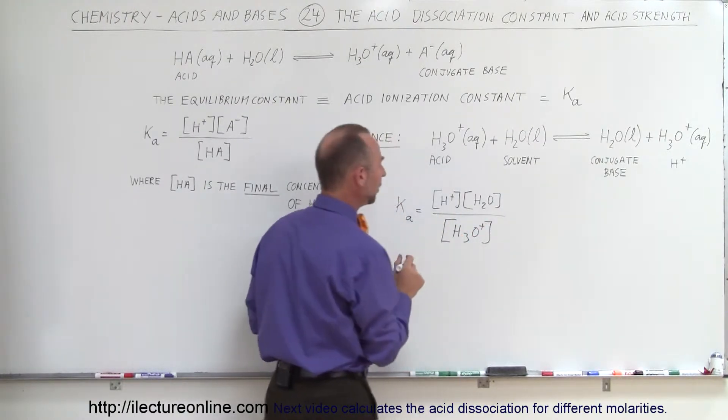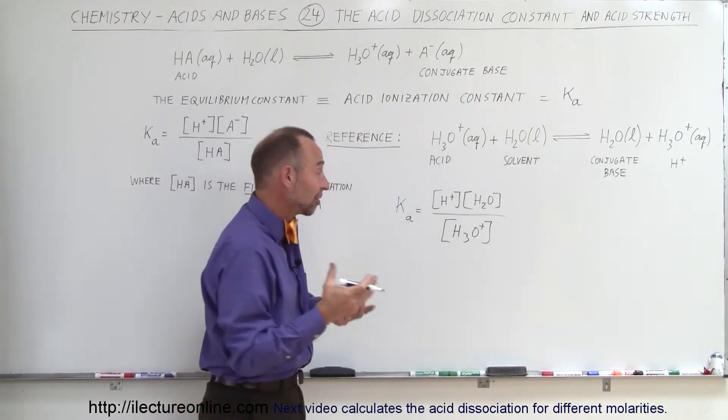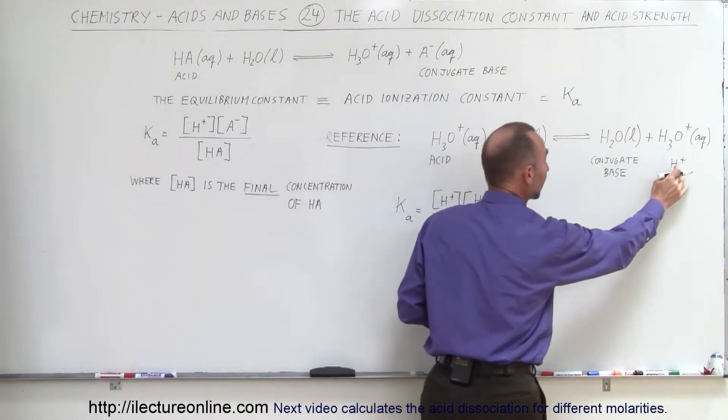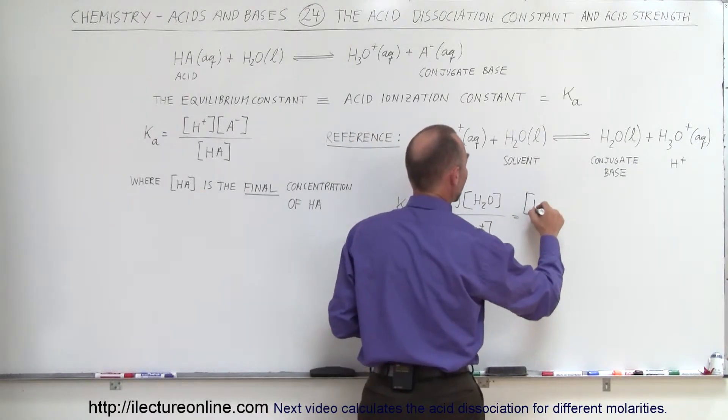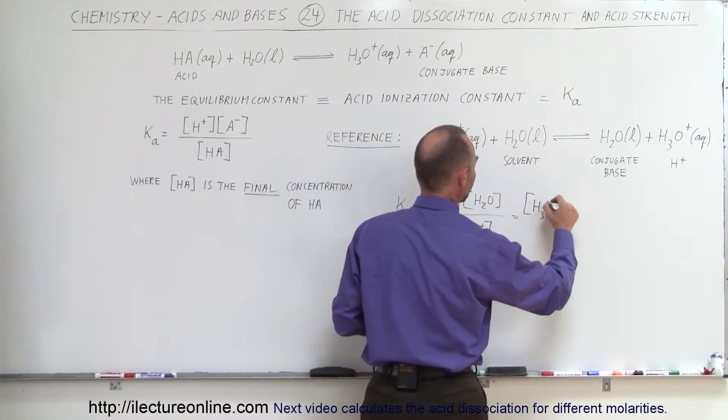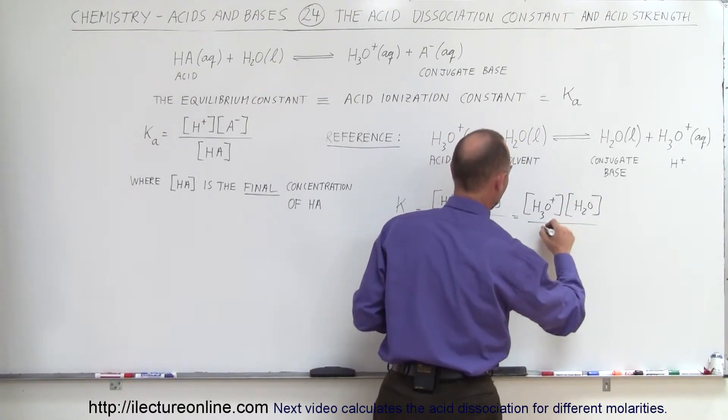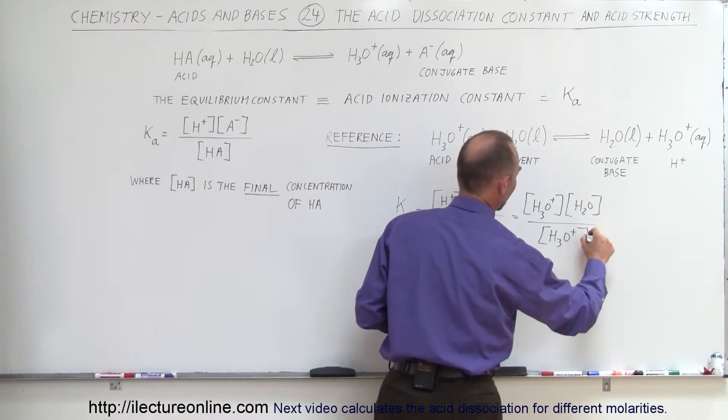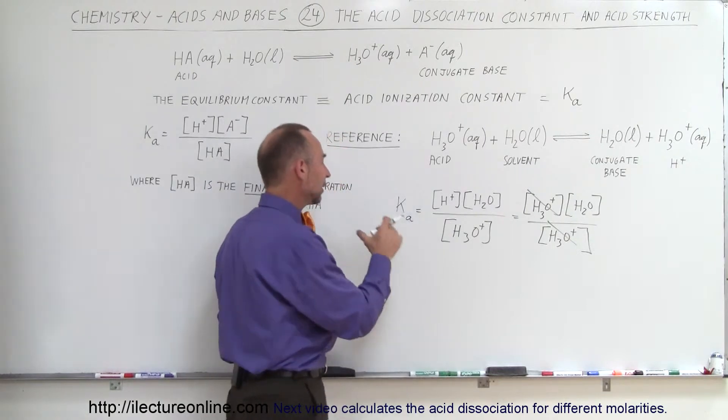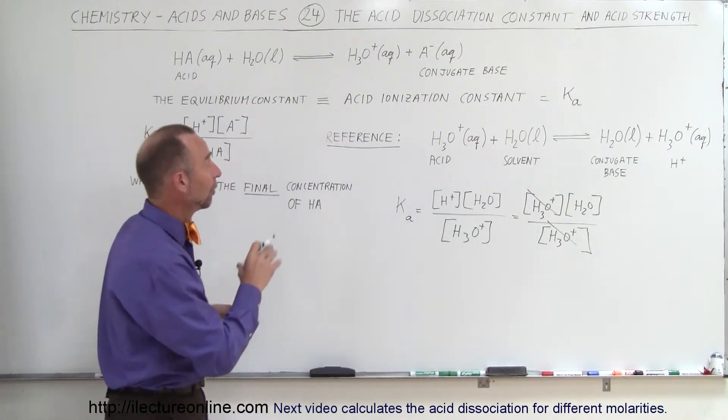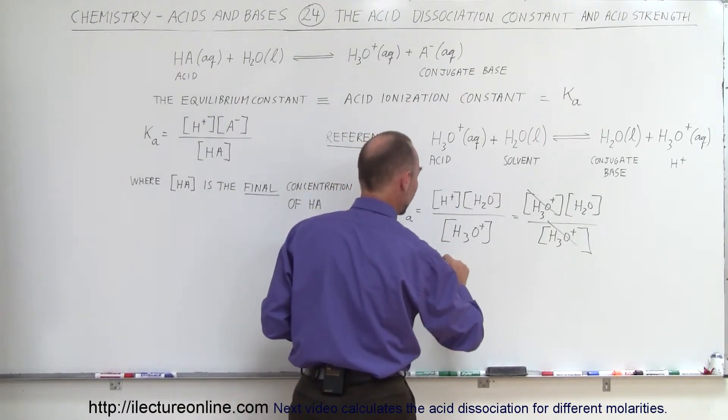Alright, now remember that the concentration of the hydrogen ion essentially is going to be the same as the concentration of the hydronium ion, because every hydrogen ion will turn back into hydronium ion, so I can actually write this as the concentration of the hydronium ion, times the concentration of the water, divided by the concentration of the hydronium ion, and of course you can clearly see that these will cancel each other out. That means that the Ka, the acid dissociation constant for water, Ka, will simply be equal to the concentration of water, H2O.